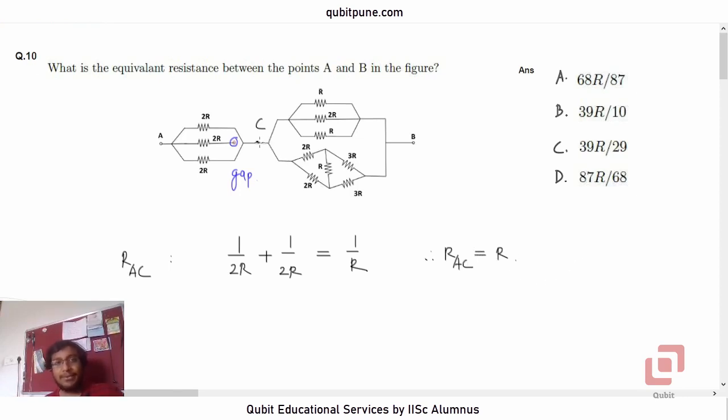Now you know that if RAC is R and the resistance after that is going to be a positive resistance, you basically understand that the resultant or equivalent resistance has to be greater than R. So you can easily rule out option A because that is less than R, 68 by 87. Anyways, we have to continue.